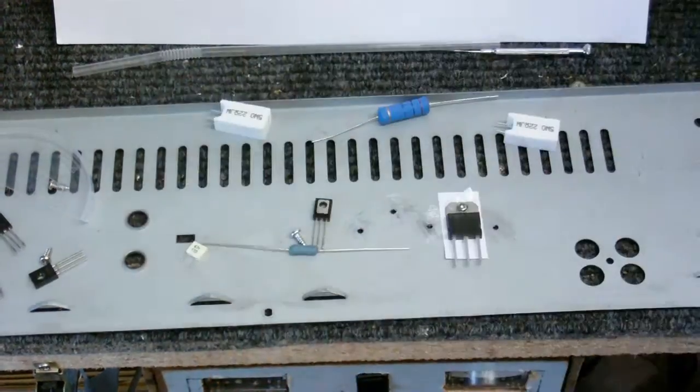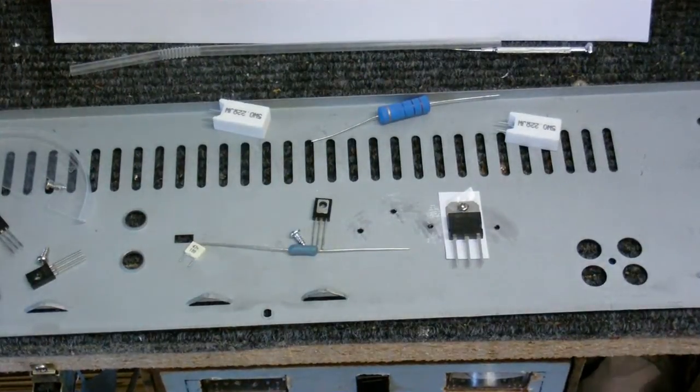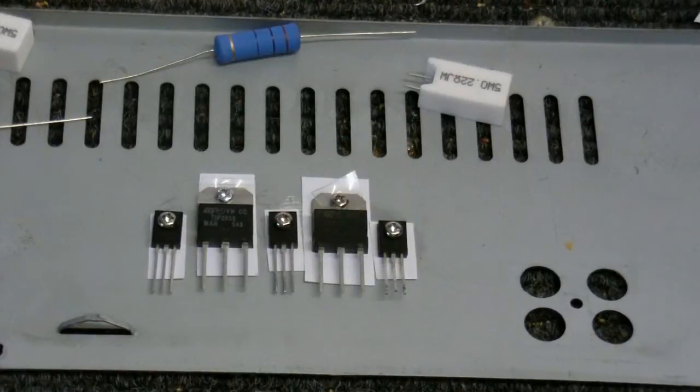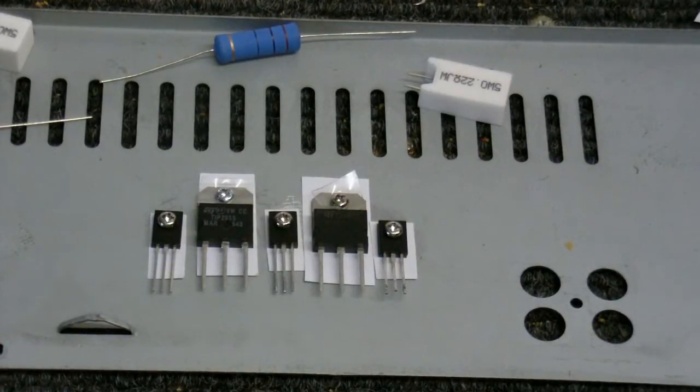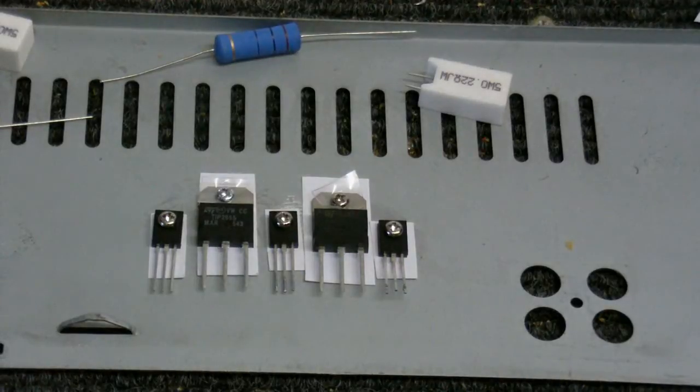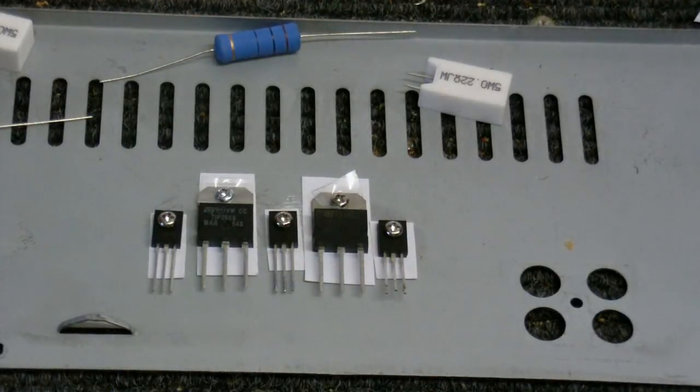Now, I'm just going to put the other ones on there. And when I've done that, I'll be back. There we go. There's all five transistors put on the heat sink. And none of them are electrically connected. I've just gone through checking that and everything's fine.